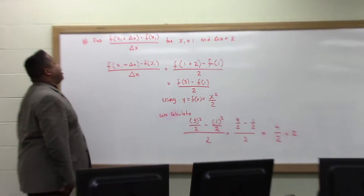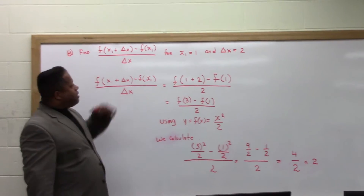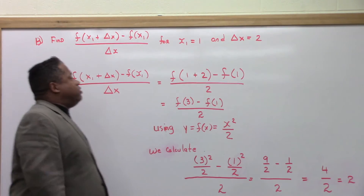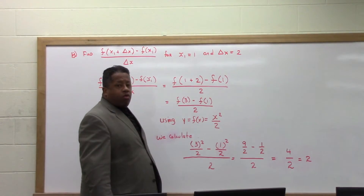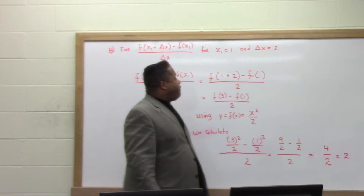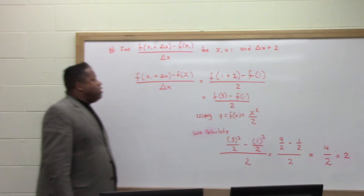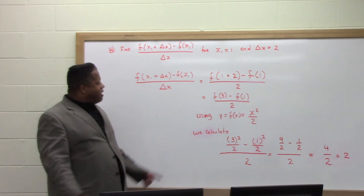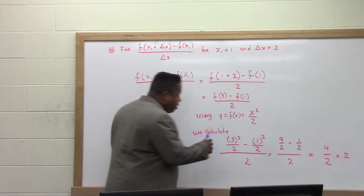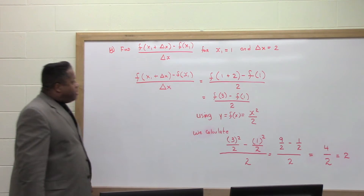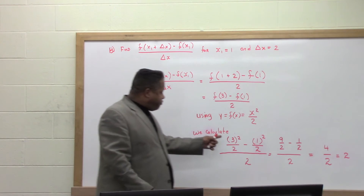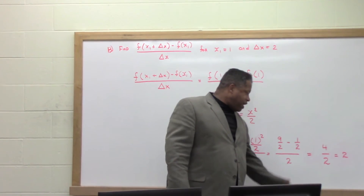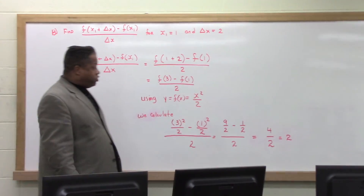Let's look at another problem. For f of x₁ plus delta x minus f of x₁ divided by delta x, with x₁ equal to 1 and delta x equal to 2, we get f of 3 minus f of 1 divided by 2. Using f of x equals x squared over 2, that's 9 over 2 minus 1 half, all divided by 2, which gives 4 over 2 divided by 2, equaling 2.